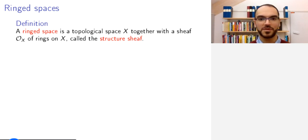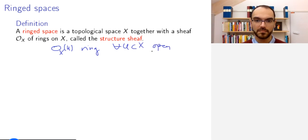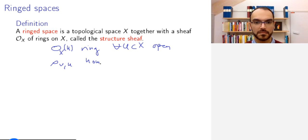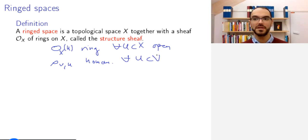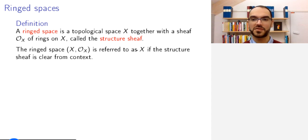A ringed space is a topological space X together with a sheaf of rings that is called the structure sheaf. This means that we have for each open set U a ring, and for each inclusion a ring homomorphism. They should satisfy the basic pre-sheaf properties and the gluing property — the sheaf property. If the structure sheaf is clear from context, we will refer to this just by the letter X, and it will be understood what the structure sheaf is.